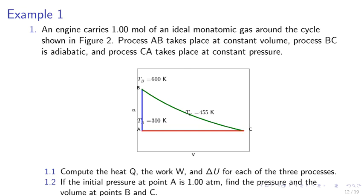Example 1. An engine carries 1.00 moles of an ideal monatomic gas around the cycle shown in figure 2. AB is constant volume, BC is adiabatic, and CA is constant pressure process. For part 1.1, compute the heat Q, the work W, and delta U for each of the three processes.